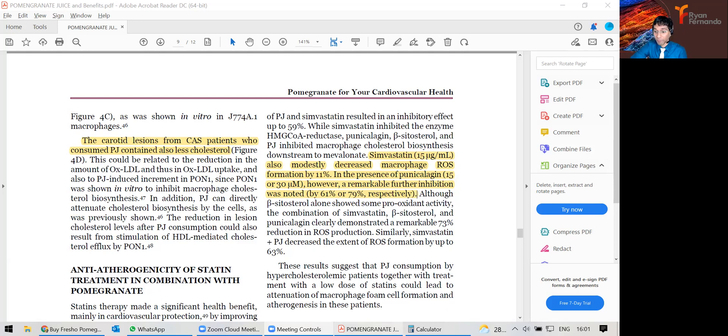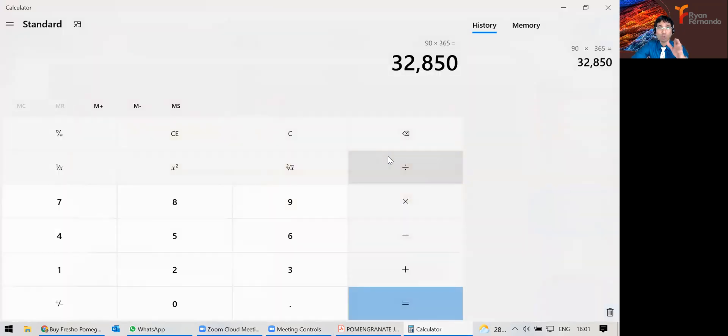By the way, I did the calculation. Here in India, I assumed 90 rupees for a pomegranate. Cost per day is going to be 32,000 rupees per year. The cost of one stent is 40,000 rupees, not counting the admission fees, doctor's fees, everything else, and the pain and suffering that you go through.